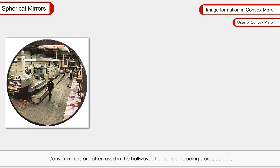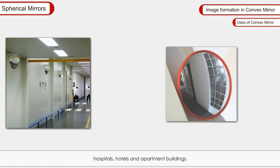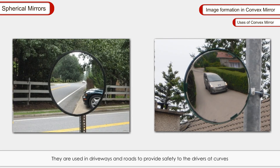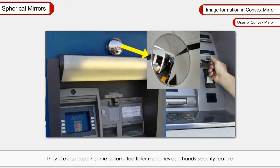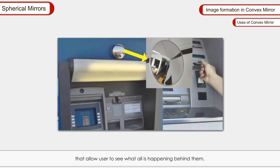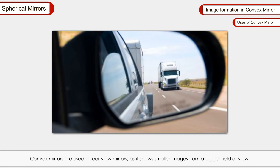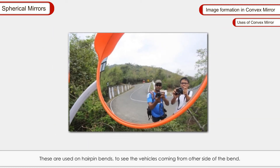Uses of convex mirrors: Convex mirrors are often used in the hallways of buildings including stores, schools, hospitals, hotels, and apartment buildings. They are used in driveways and roads to provide safety to drivers at curves where there is lack of visibility. They are used in some ATMs as a security feature to allow users to see what is happening behind them. Convex mirrors are used in rear view mirrors as they show a smaller image from a bigger field of view. They are also used on hairpin bends to see vehicles coming from the other side.